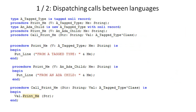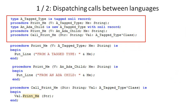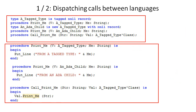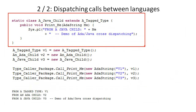ADA supports dispatching calls between languages. The upper part shows the ADA specification with declarations that will be exported to Java, and the lower part shows the body. Print me is a method on the base type and also on the derived type where it is overridden. Call print me is provided as a service to the Java client, and because it accepts a class-wide type parameter, the method print me will be dispatched dynamically. The code segment at the top shows that Java is extending the ADA base class and overriding the print me method.